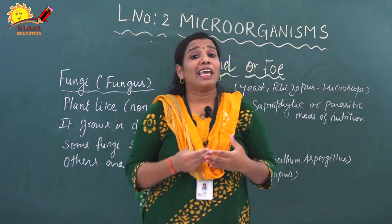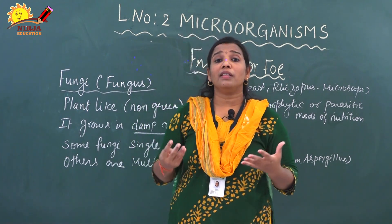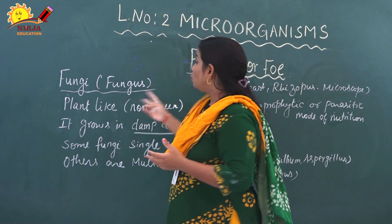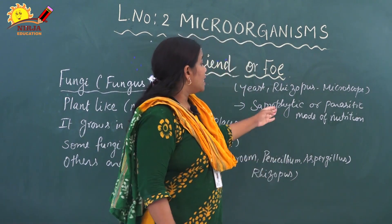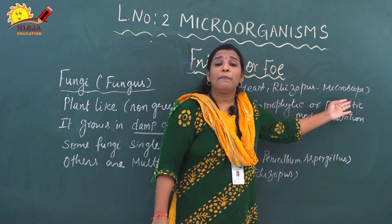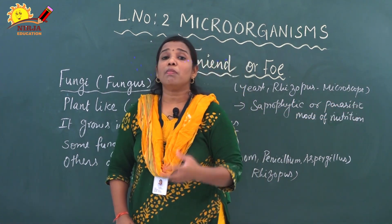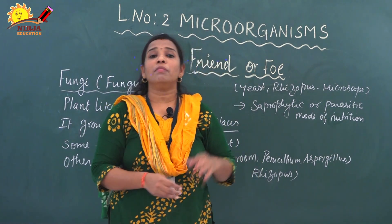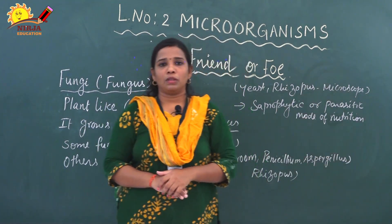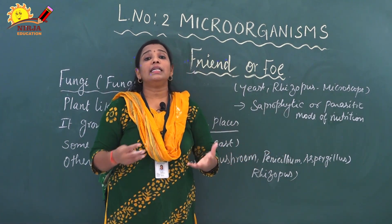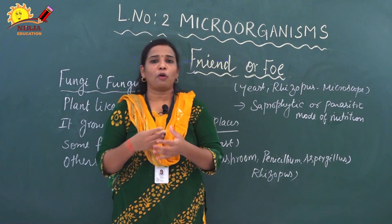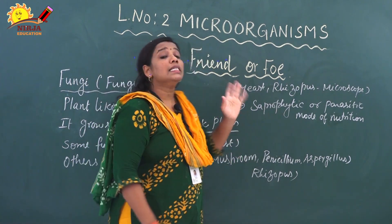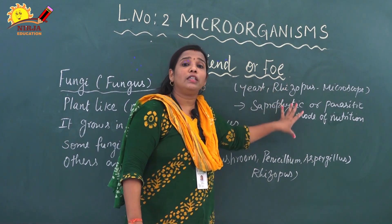Because fungi cannot make their own food, they depend on others. So they lead two different types of nutrition. One is saprophytic nutrition, and some fungi lead parasitic nutrition. Saprophytic nutrition means the organism derives food from dead and decaying matter — dead and decaying animal or plant material. Those organisms are called saprophytes, and that nutrition is called saprophytic nutrition.